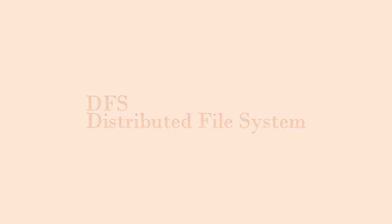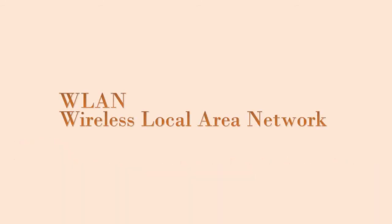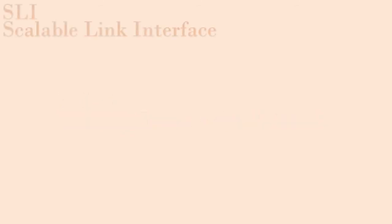OCR: Optical Character Recognition. PAL: Phase Alternating Line. ST: Straight Tip. VNC: Virtual Network Computer. WAP: Wireless Access Point. CGA: Computer Graphics and Applications. DFS: Distributed File System. PVC: Permanent Virtual Circuits. SSD: Solid State Drive. UXGA: Ultra Extended Graphics Array. VESA: Video Electronics Standards Association. WLAN: Wireless Local Area Network. SLI: Scalable Link Interface. CPU: Central Processing Unit.